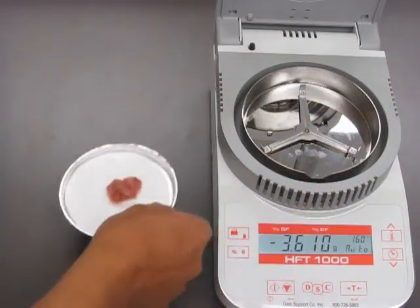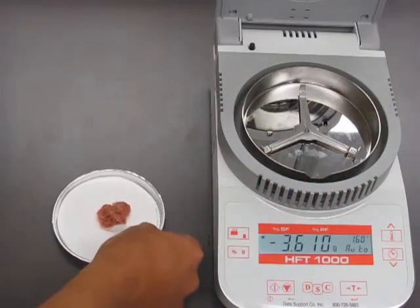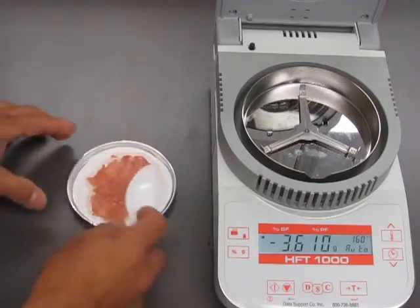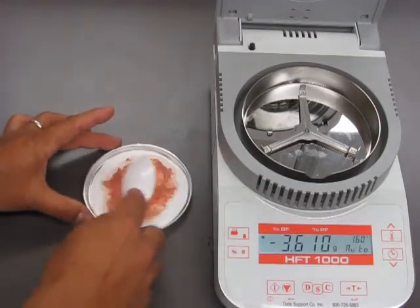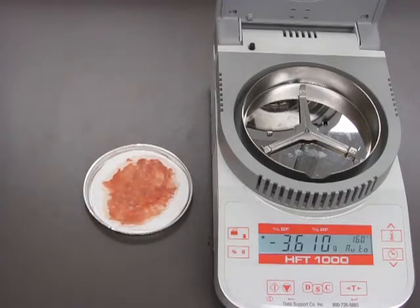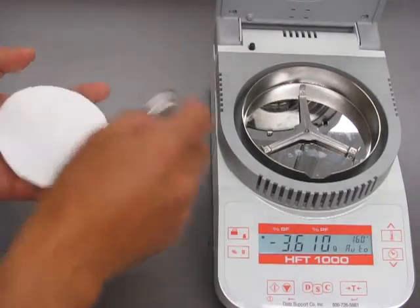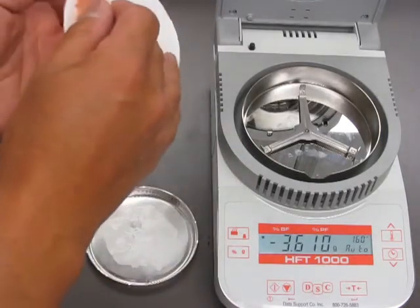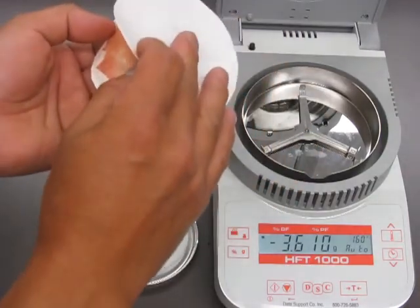You take it down here, and what you do after that is that you spread your sample as evenly and as thinly as possible on the pad. Once you have done that, you grab the pad at the bottom, put it on top.